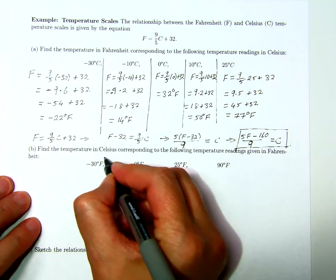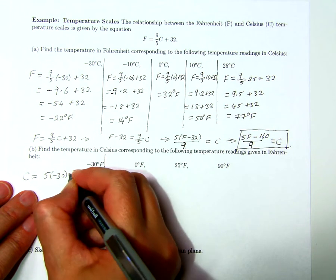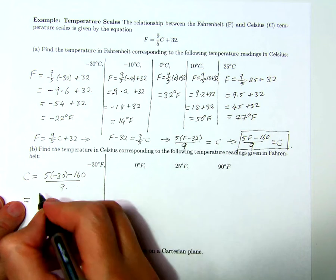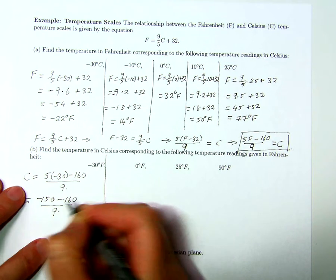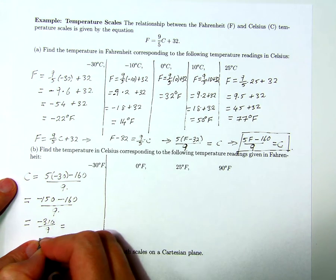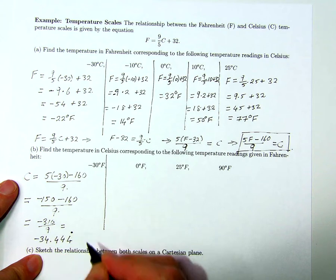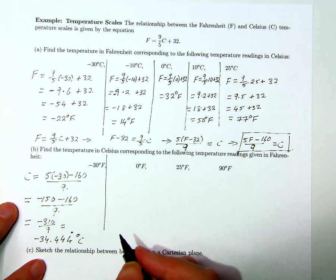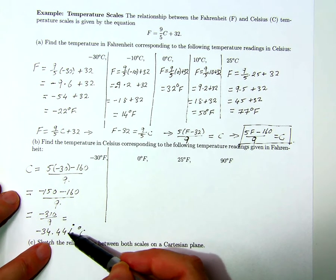Given F equals negative 30, then C is 5 times negative 30 minus 160 over 9. This is minus 150 minus 160 over 9, which is minus 310 over 9, which is negative 34.444... — those 4's go on forever, denoted by a dot over the last 4. So a reading of negative 30 in Fahrenheit translates to approximately negative 34 degrees Celsius.